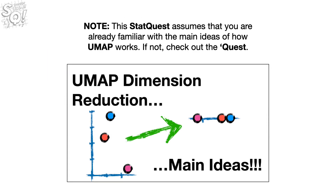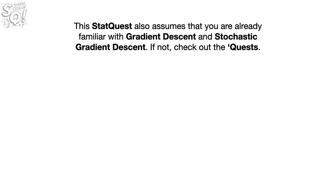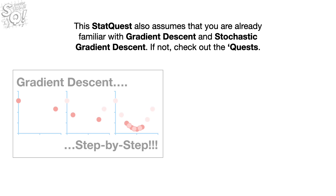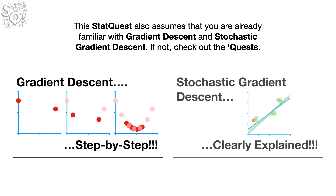Note, this StatQuest assumes that you are already familiar with the main ideas of how UMAP works. If not, check out the quest. This StatQuest also assumes that you are already familiar with gradient descent and stochastic gradient descent. If not, check out the quests.